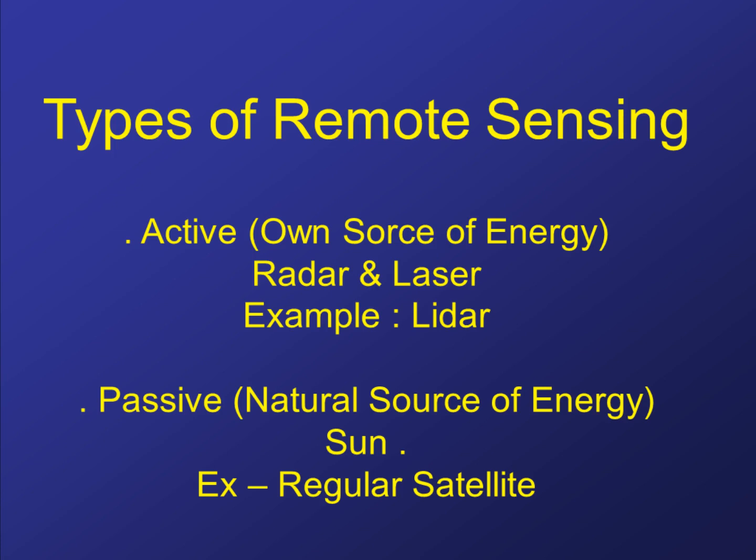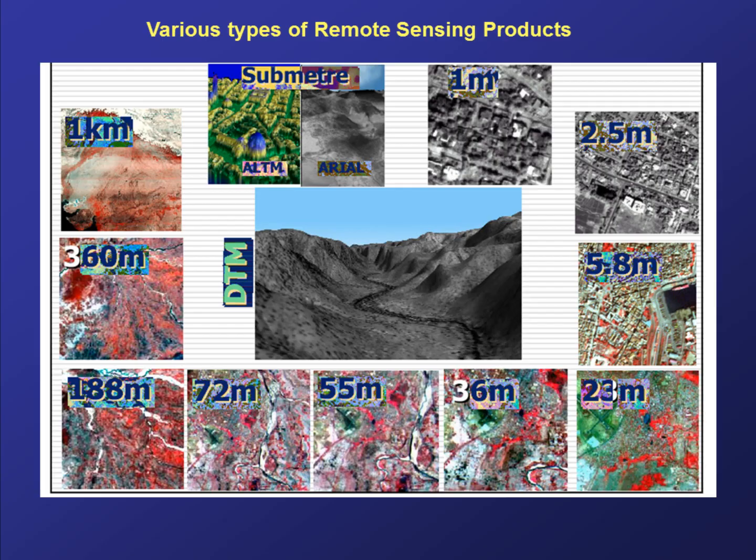There are two types of remote sensing: active and passive. The only difference is that active remote sensing has its own source of energy, such as radar and laser — an example is LiDAR. Passive remote sensing uses a natural source of energy, which is the sun. These are different resolution outputs of satellite pictures, which can be used in different projections and at different scales.